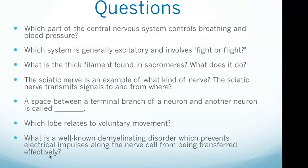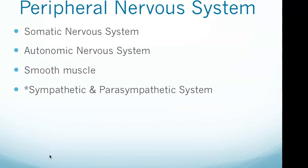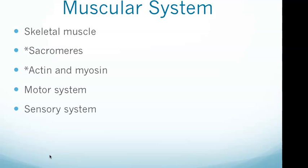Returning to question three — what is the thick filament found in sarcomeres and what does it do? The thin filament is actin, but the thick filament is myosin. The motor system controls voluntary muscles; the sensory system carries information from sensory receptors and nerve endings.